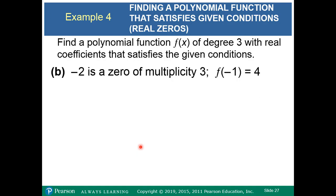Note: in this example we cannot clear the denominators in f of x by multiplying each side by 2, because the result would equal 2 times f of x, not f of x. So you have to be careful — in some cases you cannot get rid of fractional coefficients.